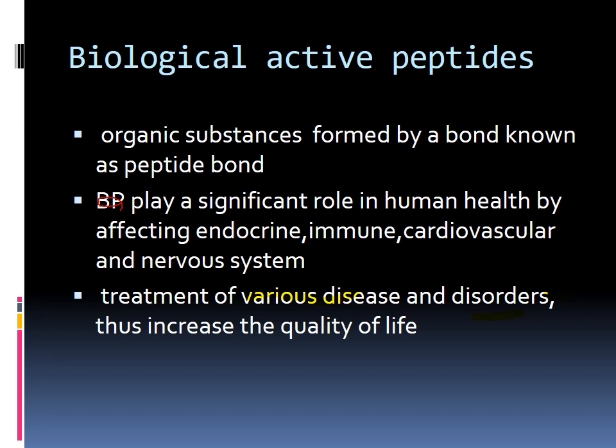Biologically active peptides — the word 'biologically active' means these peptides are biological or organic molecules that are involved in functions necessary for the body. As previously discussed, glucagon and insulin are active molecules involved in glucose maintenance, so they are biologically active. They perform different functions inside the human, animal, or plant body necessary for survival. These active polypeptides perform their functions under the supervision of the endocrine system, immune system, cardiovascular system, and nervous system, which are mostly regulated by blood pressure.